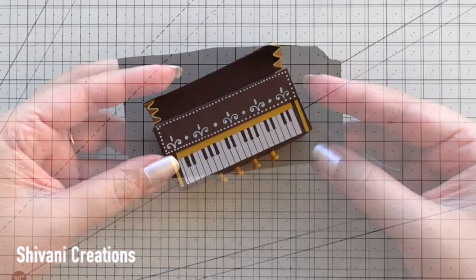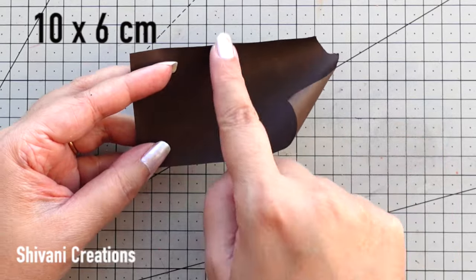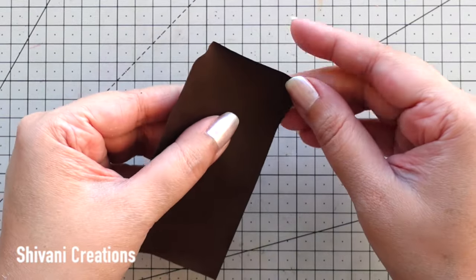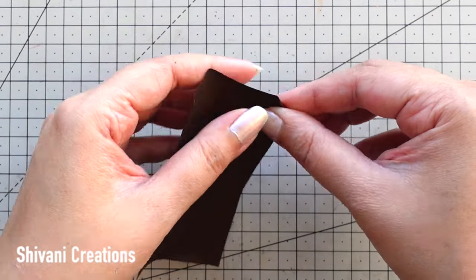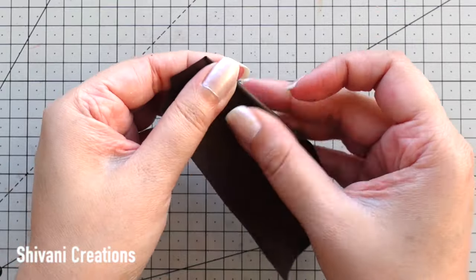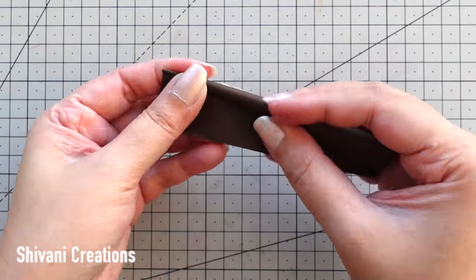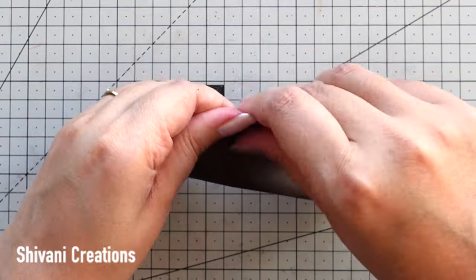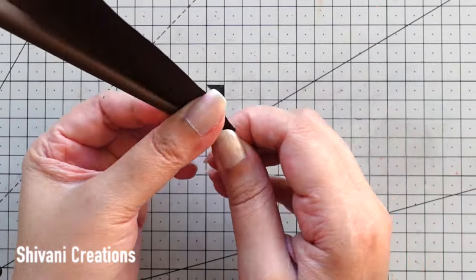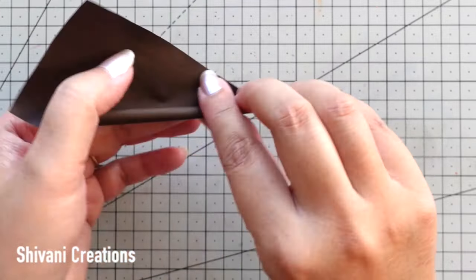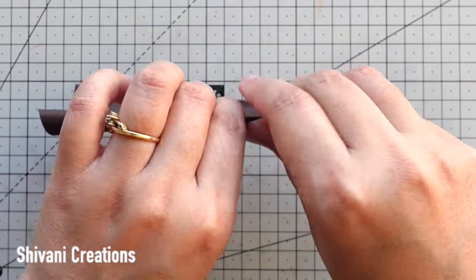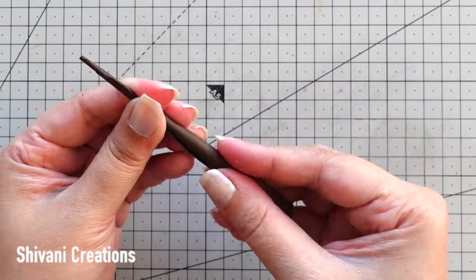Now I am proceeding for the shahnai. For this I am taking 10x6cm brown color paper and from one corner I will start rolling it. We have to pinch in one corner and just loosen on another side. That means we need to create one cone kind of shape. It should be nice and tight. Like this. Now securing it using glue.